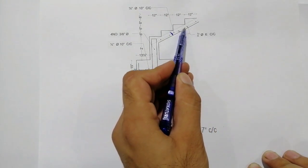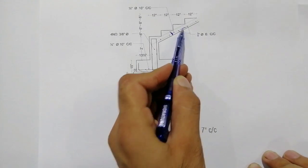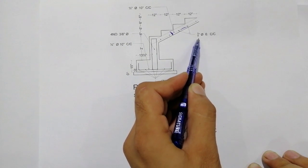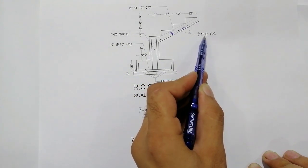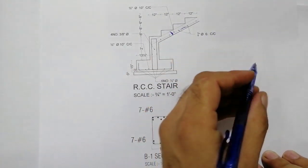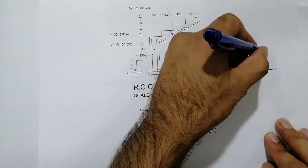This is the main reinforcement, which has a diameter of five-sutra, or five by eight inches, with the spacing of six inches. You can see the spacing is six inches. I will draw it from the top.